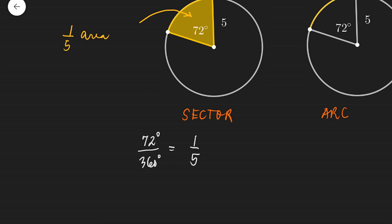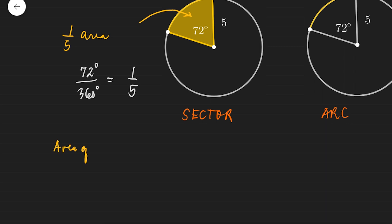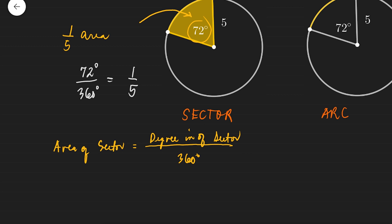So let's write the formula. The area of a sector is equal to the fractional part — which is the degree of arc in sector, or the central angle — divided by 360 degrees, multiplied by the whole area, which is pi r squared.